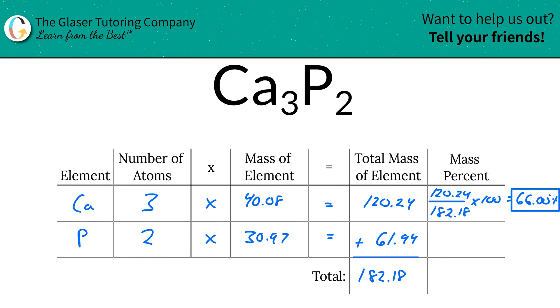And then phosphorus. Now you could subtract this value from 100 to find the value of phosphorus, but maybe you made a mistake here and you don't want the mistake to propagate into phosphorus. So what I'm going to suggest you do is you take the total mass of that element, 61.94, then divide it by the total mass of that compound, 182.18 times 100.